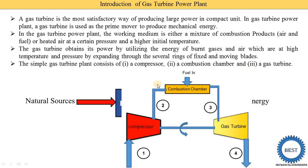The simple gas turbine plant consists of a compressor, combustion chamber, and a gas turbine. In the diagram, the first component is the compressor, the second is the combustion chamber where fuel is supplied, and the third is the gas turbine. During compression, the input is only air. For an open cycle, these three components are used; for a closed cycle, one more heat exchanger is added — open and closed cycles will be discussed in a later video.